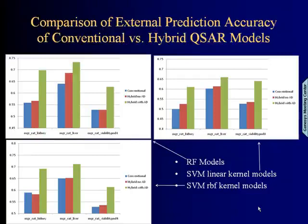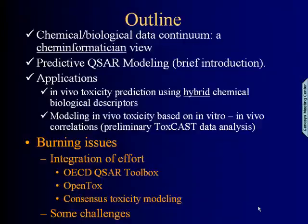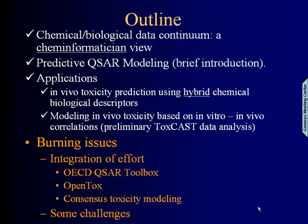This is still data exploration — no prospective prediction yet — but we believe we're achieving model accuracy that will allow us to prioritize compound selection for ToxCast phase two. The combined use of biological data and chemical descriptors substantially improves predictive power over models using either alone. There is a real need and opportunity to collaborate with biologists and biological data to build predictive chemical toxicity models.